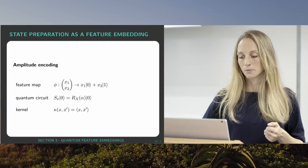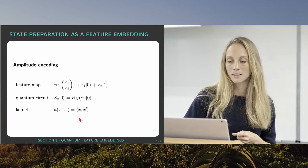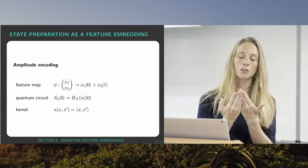And the kernel this gives rise to is the linear kernel, obviously, because we now have basically our input vector x and x dash encoded in the amplitudes of a quantum state and the overlap is just the inner product of those two vectors.